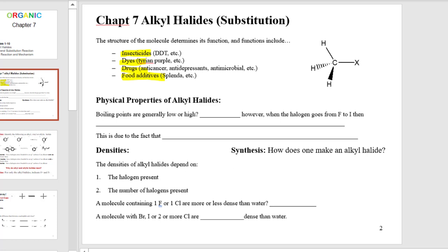Alkyl halides are carbons that have some halogen on them. We're talking more specifically about chlorine, bromine, and iodine.